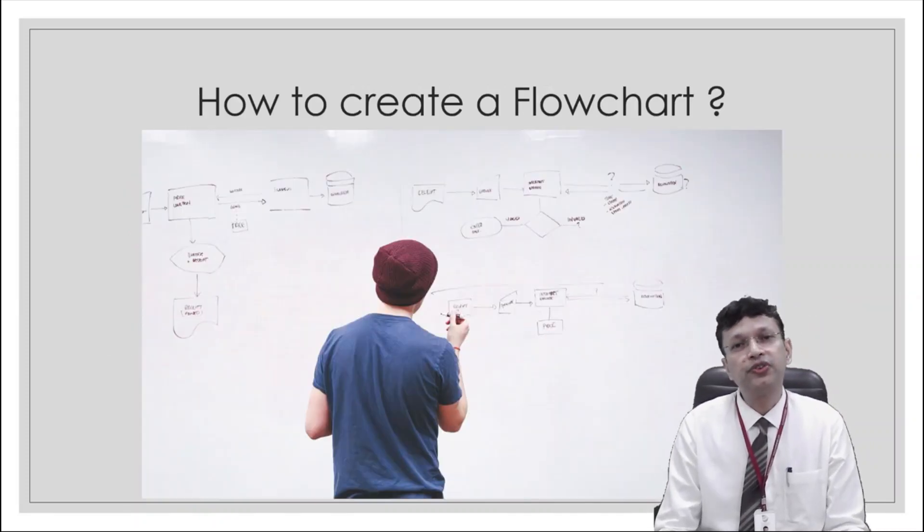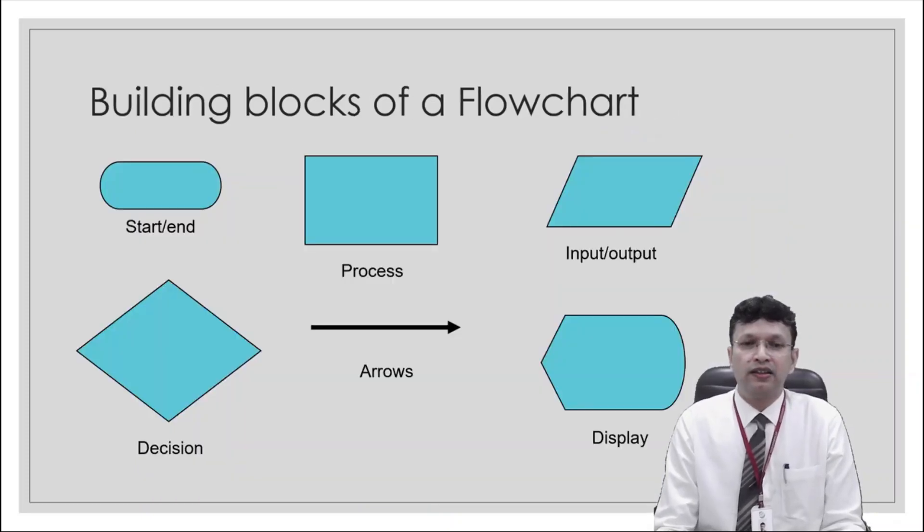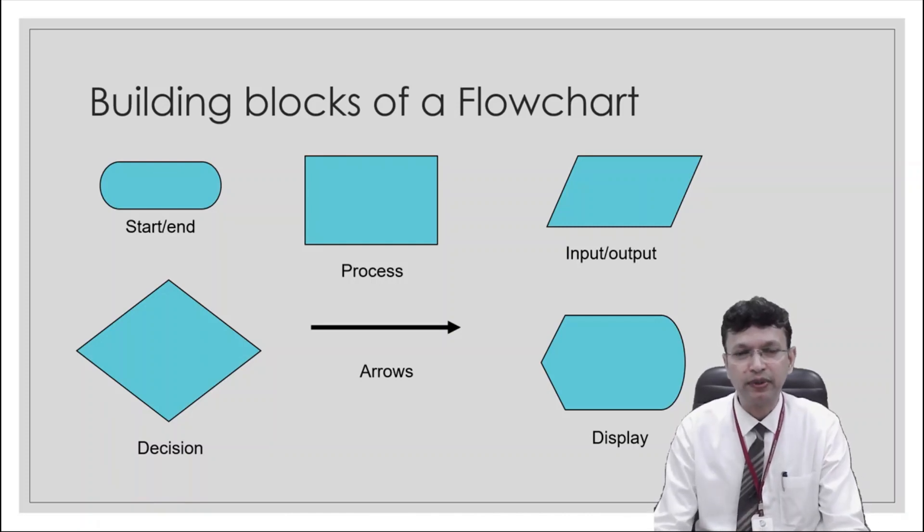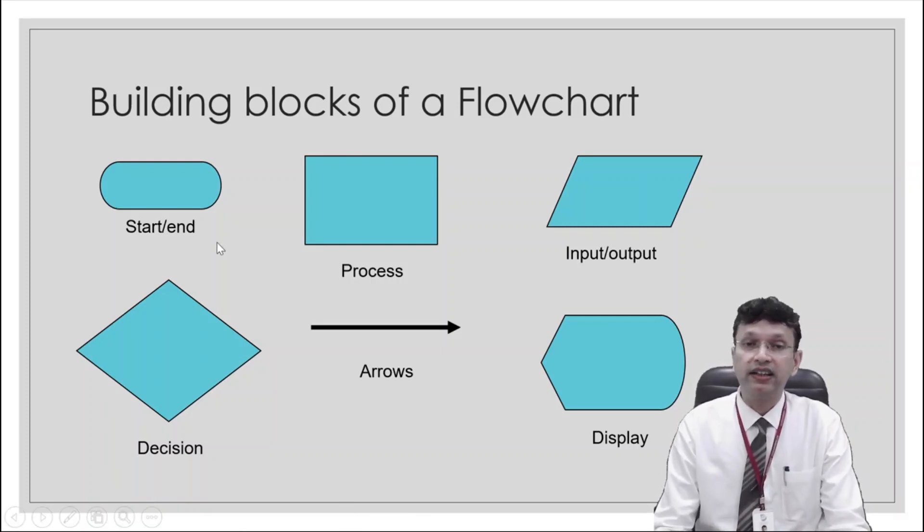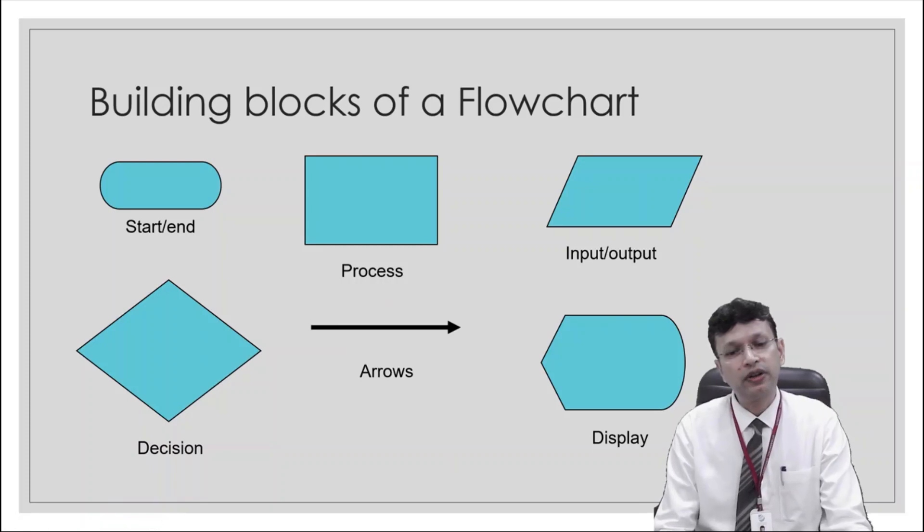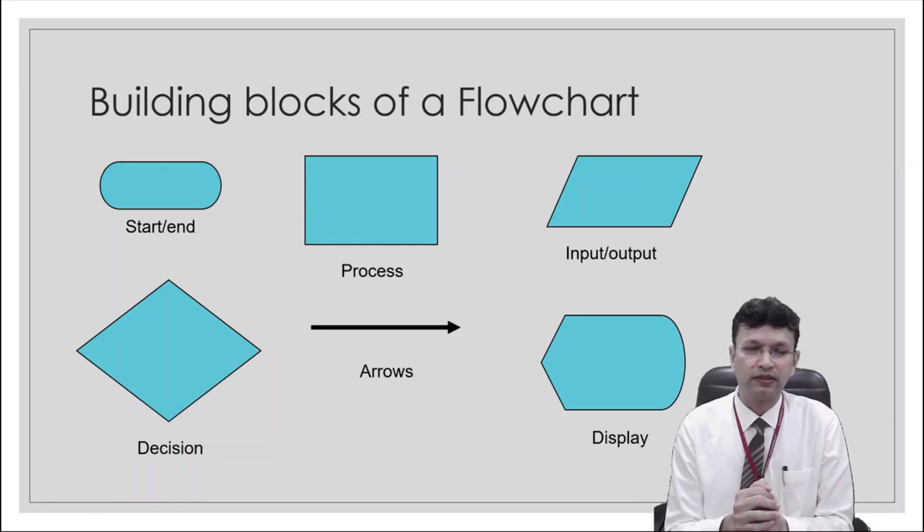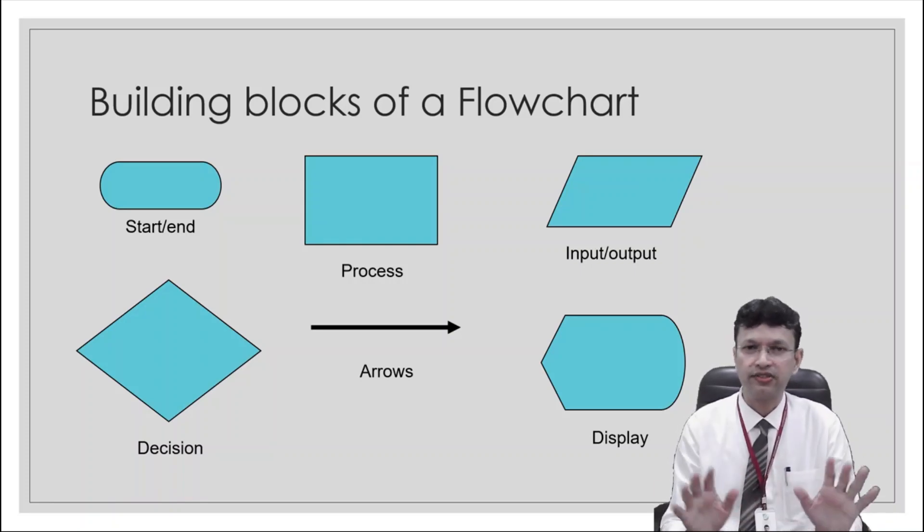Now the question comes how to create a flowchart. So we need to first know some building blocks of a flowchart. Like these are the building blocks. We have start and end. Then we have a rectangular box which is for process. We have a parallelogram which is for input and output. We have a diamond-shaped box which is basically used for decisions. Then we have connectors which is arrows and we also have a display box. Apart from these we may have some additional blocks as well but for now we are concentrating only on these blocks.